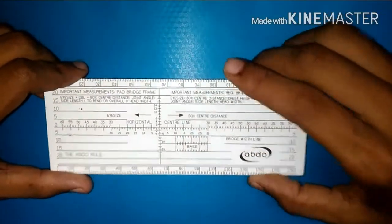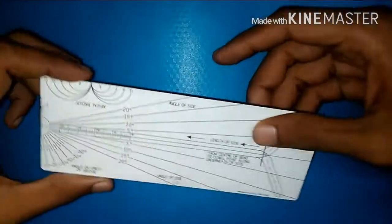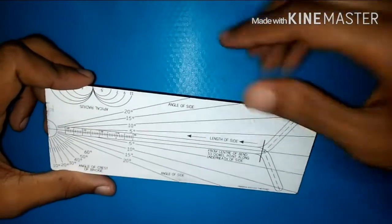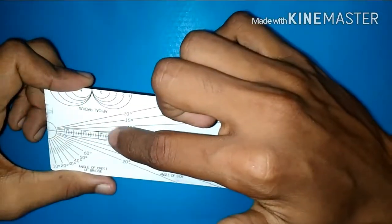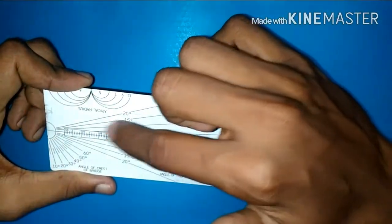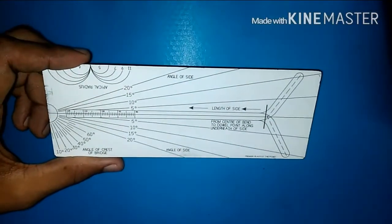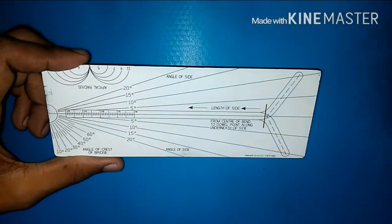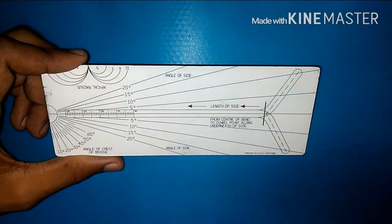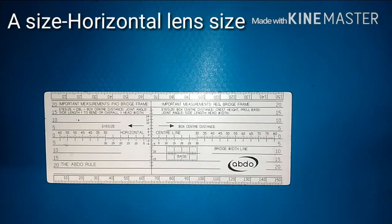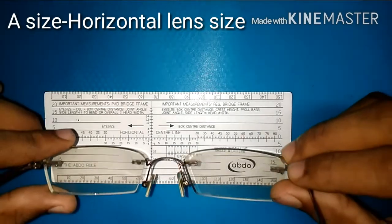This is the front surface of the scale and this is the back surface of the scale, which is used to measure the apical radius, angle of sides, splay angle of the frames, etc.